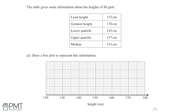This table gives some information about the heights of 80 girls. We have the least height of 133 centimeters and the greatest height, giving us the range. We have the lower quartile, where the bottom 25 percent are below 145 centimeters, and the upper quartile, where the top 25 percent are taller. Then we have the median, which sits between the quartiles — it's the middle height.